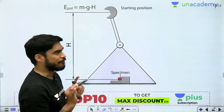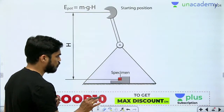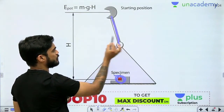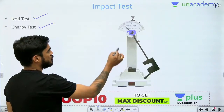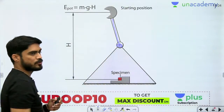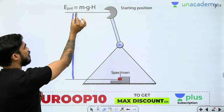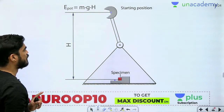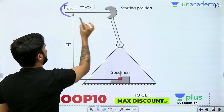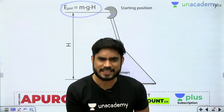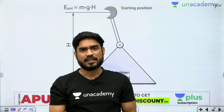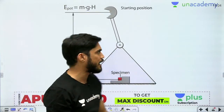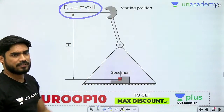This is the starting position of the test. We put the specimen in place and raise the hammer to an initial position — it can rotate about a hinge. We measure the initial height of this hammer from the base, which gives us the initial potential energy of the hammer. Raising a body from the ground stores potential energy in it.